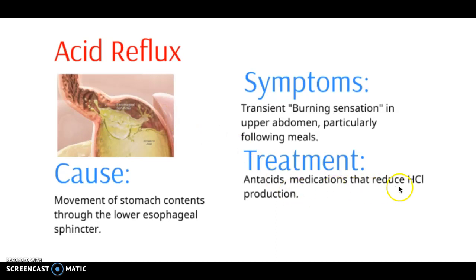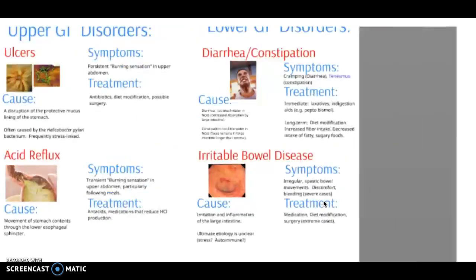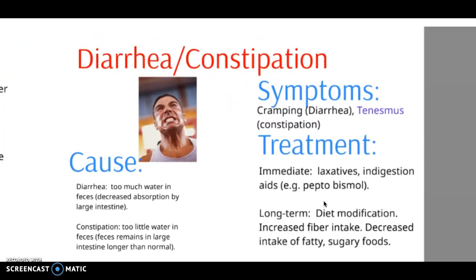Medication that reduces HCl production can help with acid reflux. Remember, HCl is a part of the gastric juice because it helps enzyme function. Using an antacid helps neutralize that extra amount of hydrochloric acid. The next disorder is diarrhea and constipation, which is a problem with water intake. If too little water is reabsorbed from the large intestine, you get diarrhea. If too much water is reabsorbed from the large intestine, then you get constipation.